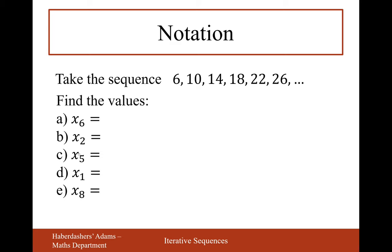Take this sequence and answer questions A to E. x₆ refers to the sixth term, which would be 26. x₂ would be 10, the second term. x₅ would be the fifth term, 22. x₁ is always the first number, 6. And x₈ - the pattern is add 4, so that would be 30 and then 34. The answer to x₈ is 34.